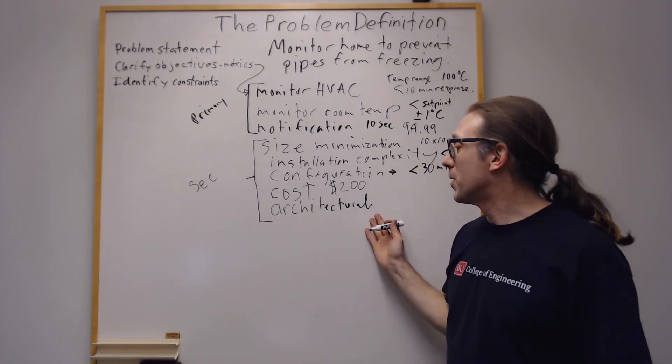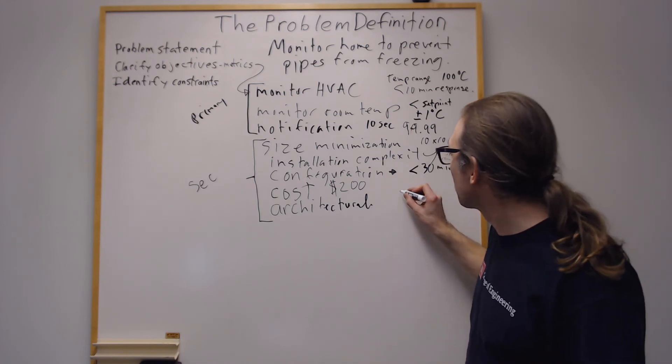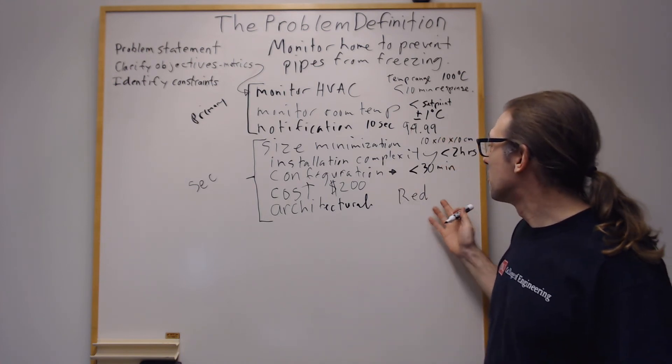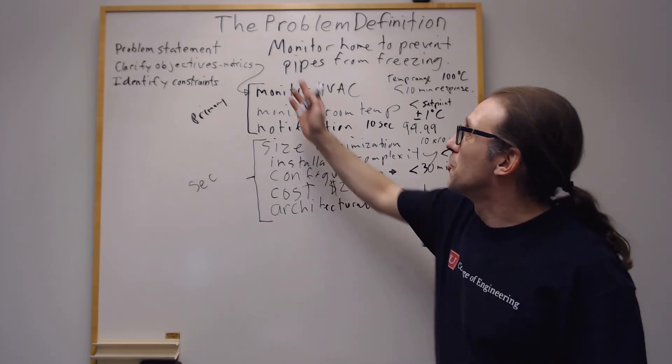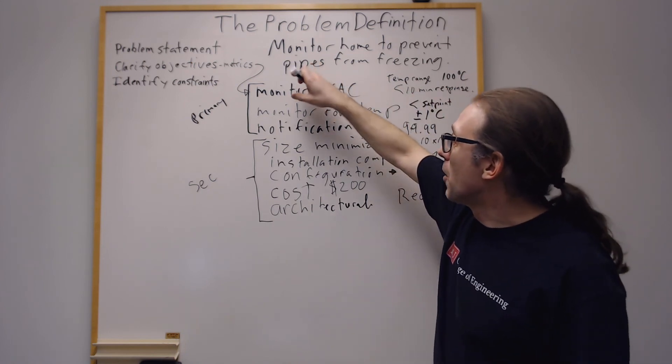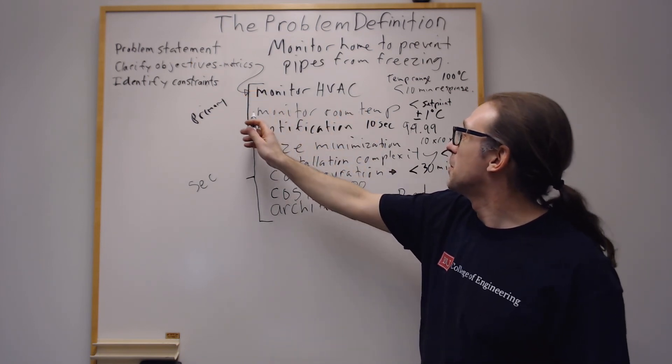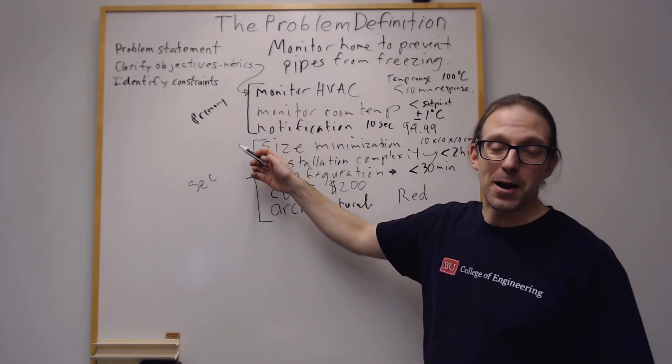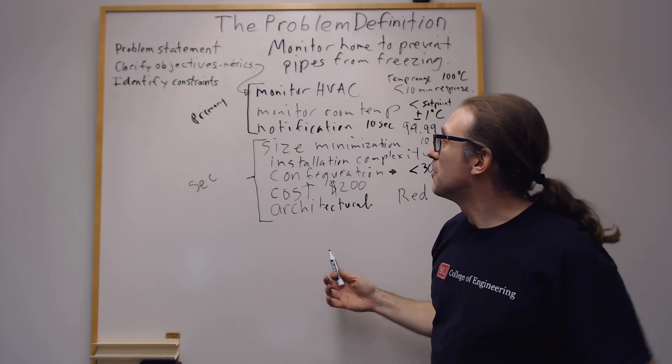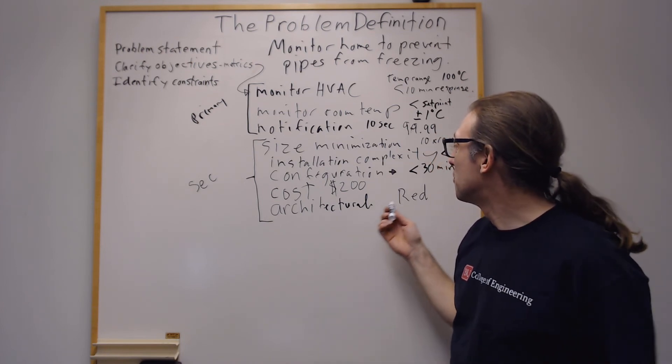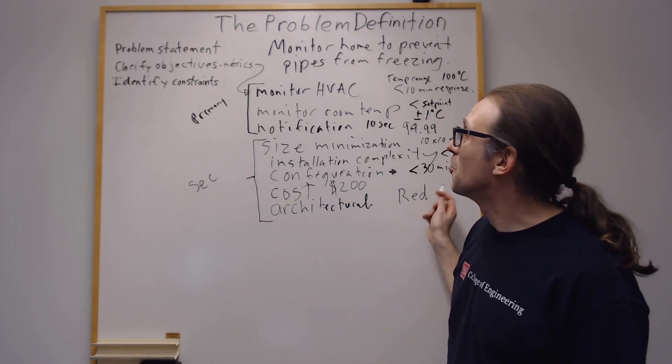And these are things you should have gotten from your client meeting. So architectural requirement could be does it need to be a certain color? If it's for Boston University, we probably want it to be red. And if it's not red, we might not be happy with that, but the device will still work. So these are objectives and metrics, and it just happened that I wrote them down really kind of in rank order. We're monitoring the HVAC system and the room temperature and notifying the user are really primary. And then these are kind of in diminishing significance right here. In other words, like if it's not red, it's still a good device and maybe we can live with that or we can paint it. So that's not going to be a showstopper.